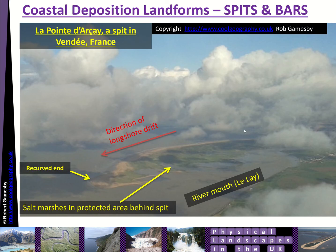In terms of spits, you can see one here in the Vendée in France, which I took from a plane window. A spit is a long, very narrow feature — you might get salt marshes behind it, as you can see here. They form across river mouths where sediment is moved along a coastline by longshore drift. They often have a recurved end where sediment is pushed inland by the waves.